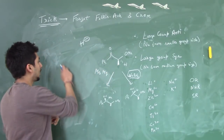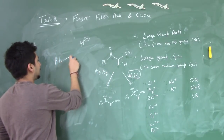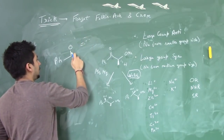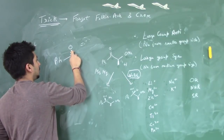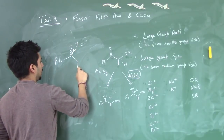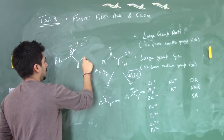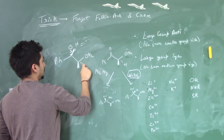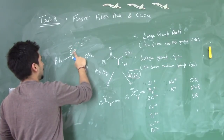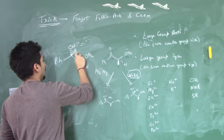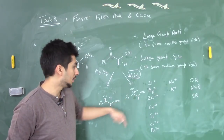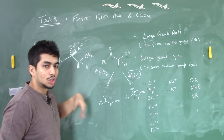Since H⁻ attacks from above the plane (from the methyl side), the OH forms below the plane and hydrogen is above the plane. So in this product, OH is below the plane and H is above the plane.